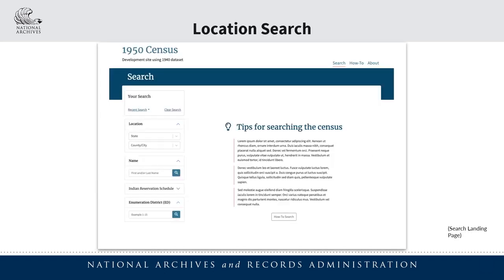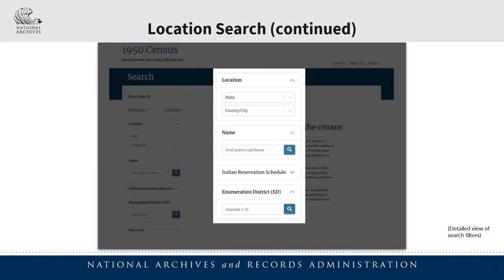In the left sidebar area, there are a number of search filter options available which visitors may use to explore the 1950 census records. These search filters include state, county or city, name, reservation, and enumeration district.